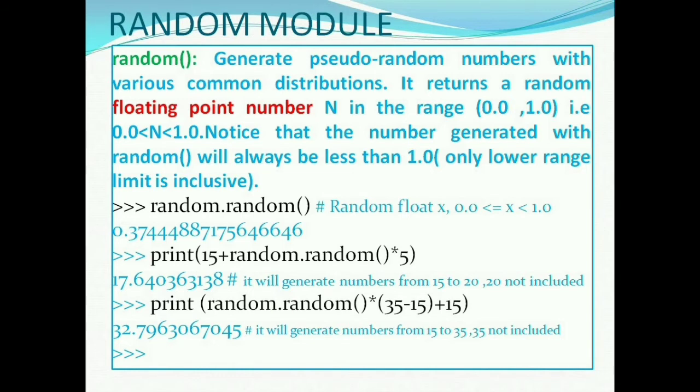It may generate any floating point number. In the third example, it will generate 15 plus 35 minus 15, means 15 to 35, but the higher limit 35 is not included, but remember only floating point numbers between 15 to 35. This way, the random function will generate numbers which is less than 1.0 and greater than or equal to 0.